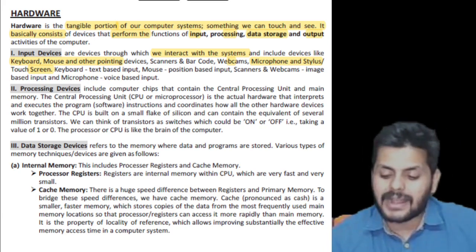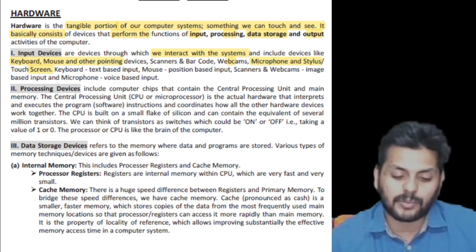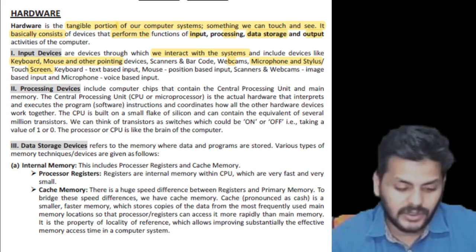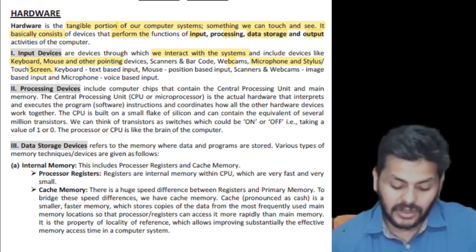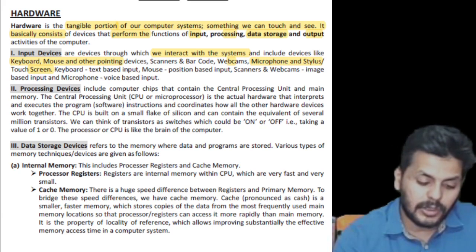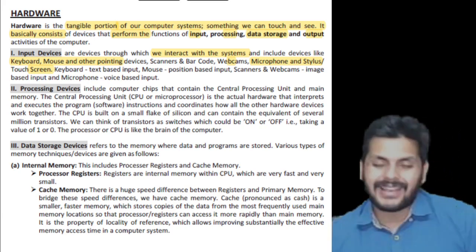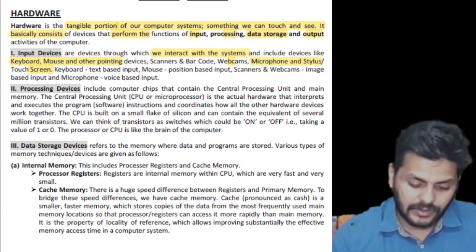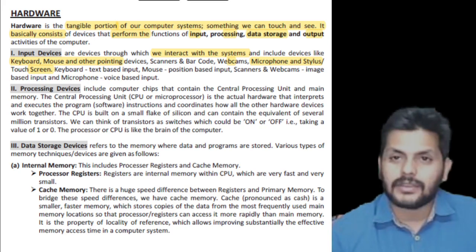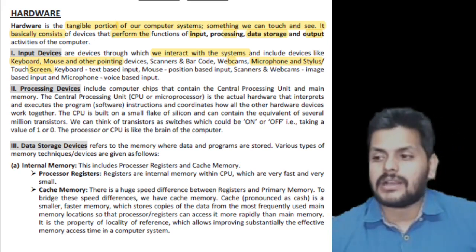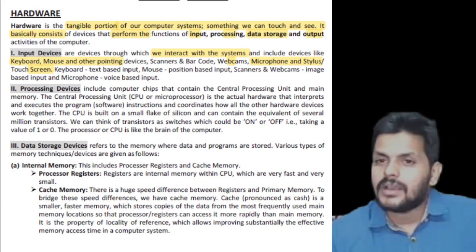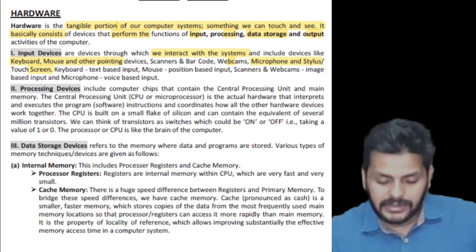Processing devices — remember the control unit, arithmetic logic unit (ALU), and memory unit? These are the three components of the CPU. The ALU performs all mathematical functions, the control unit controls the flow of data into and outside the system, and there is a small memory unit with registers.